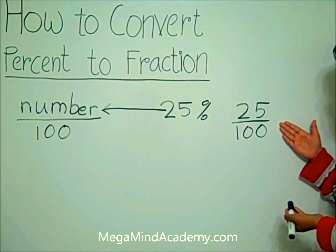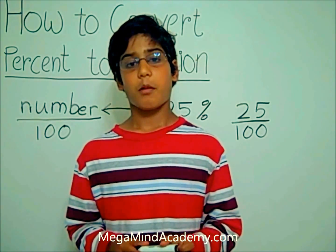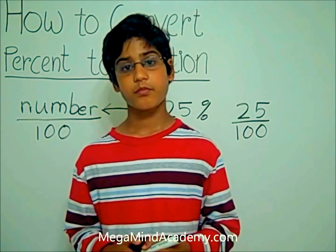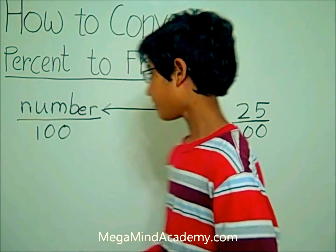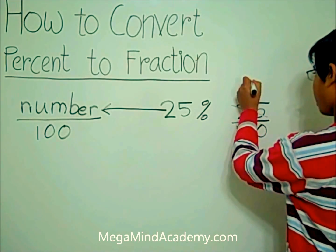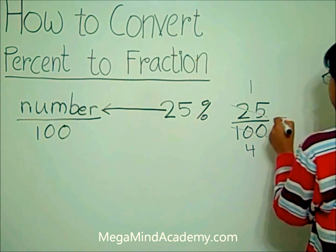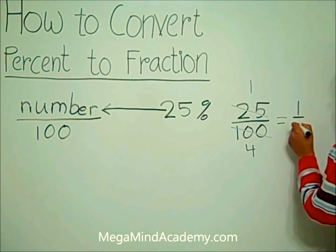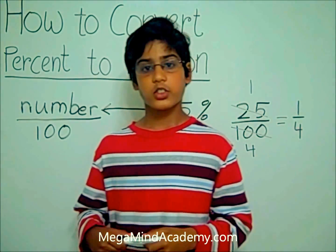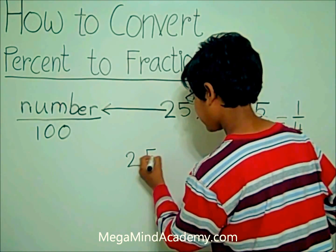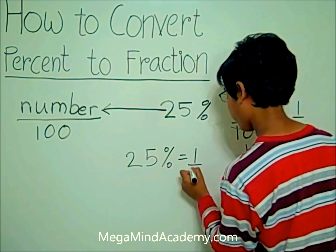Is this the simplest form of the fraction? No, because both the numbers are divisible by twenty-five. Twenty-five times one equals twenty-five, and twenty-five times four equals one hundred. So you cross out twenty-five and put one, and you cross out one hundred and put four. Our new fraction is one over four. So that means twenty-five percent equals one over four.